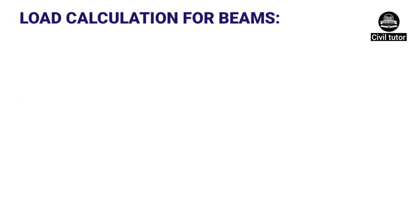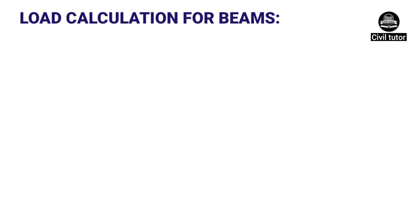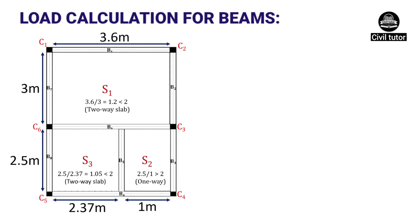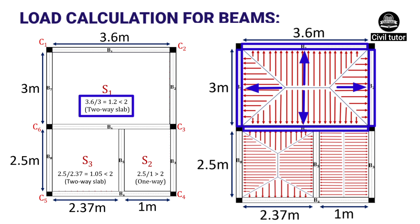Now let's do the calculation for beams. The load transferred from the slab to its supporting beams depends on the type of slab — whether it is a one-way slab or a two-way slab. For slab S1, the aspect ratio, i.e. the ratio of longer span to shorter span, is 3.6 / 3 = 1.2, which is less than 2, indicating that S1 is a two-way slab. Hence load distribution takes place in both directions, carried by beams B1, B2, B6, and B7.